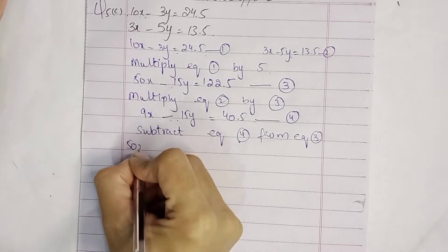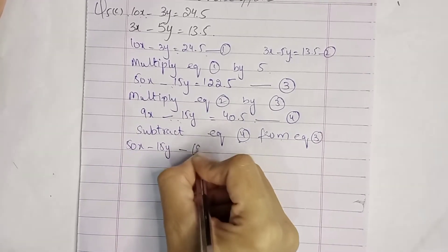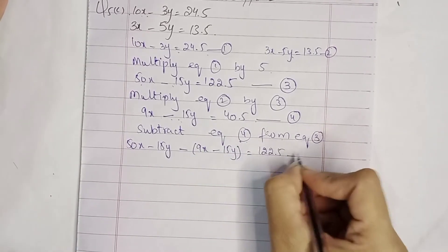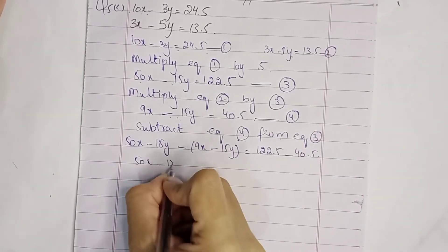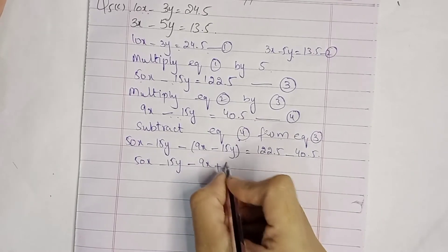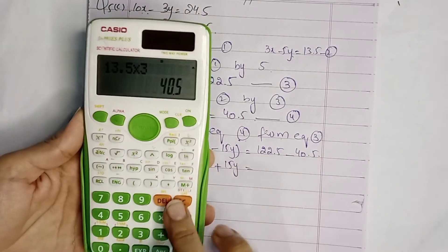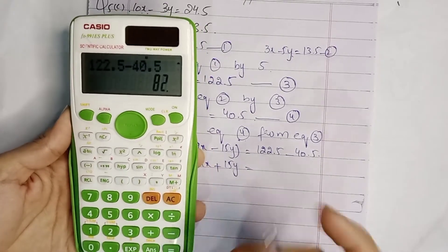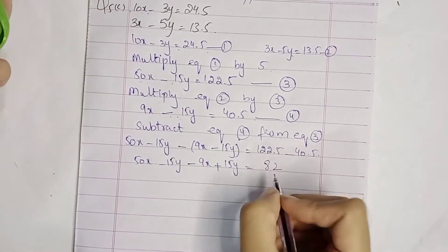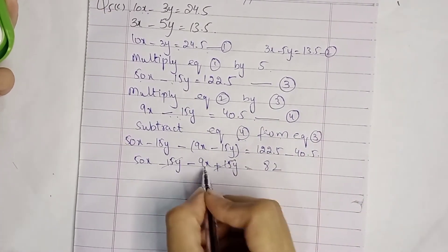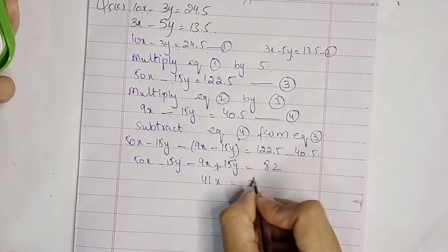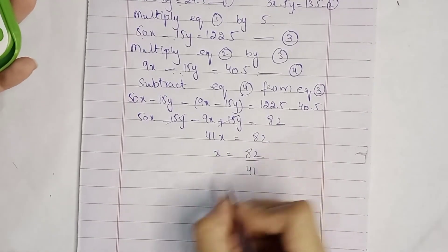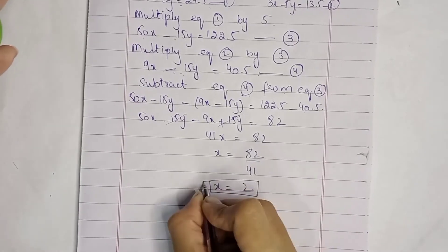50x minus 15y minus 9x minus 15y equals 122.5 minus 40.5. We get 41x equals 82. We divide this, so 82 over 41 equals 2. So x equals 2.